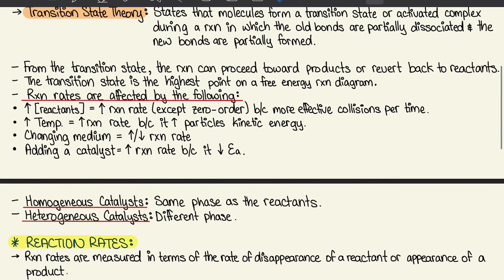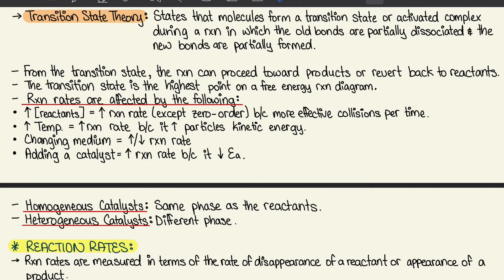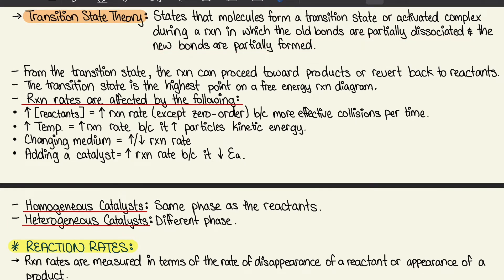Next we move on to transition state theory, which states that molecules form a transition state or activated complex during a reaction in which the old bonds are partially dissociated and the new bonds are partially formed. This is the middle state — not fully formed but not fully dissociated either. From the transition state, the reaction can proceed towards products or revert back to the reactants.